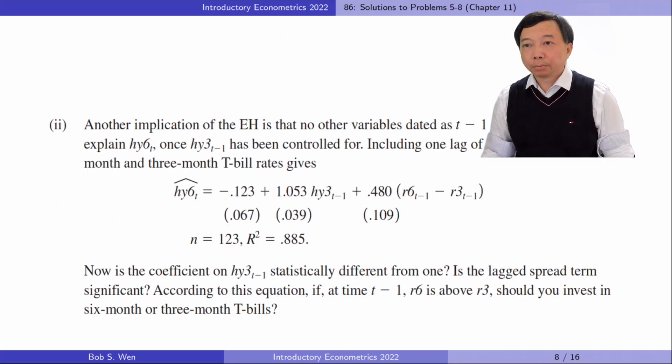In part 2, another implication of the expectations hypothesis is that no other variables dated as t-1 or earlier should help explain hy6_t once hy3_{t-1} has been controlled for. Including one lag of the spread between 6-month and 3-month t-bill rates gives the following equation.